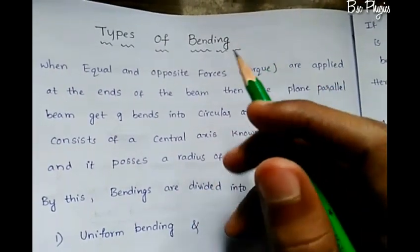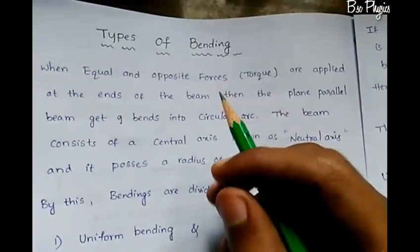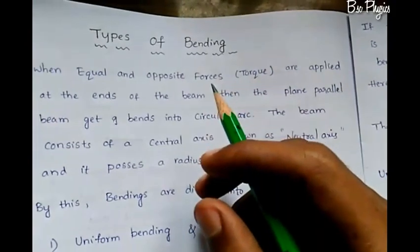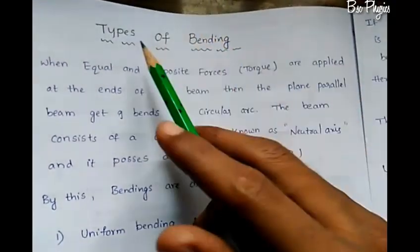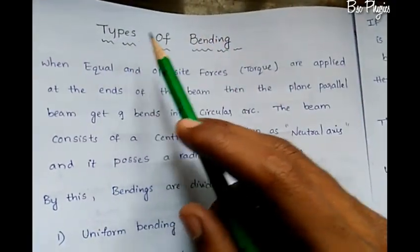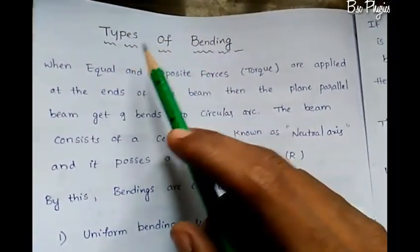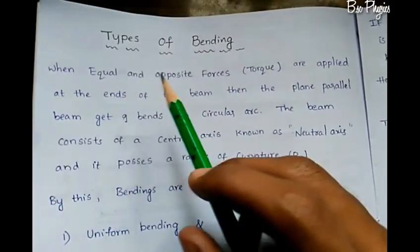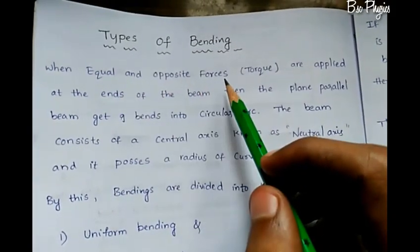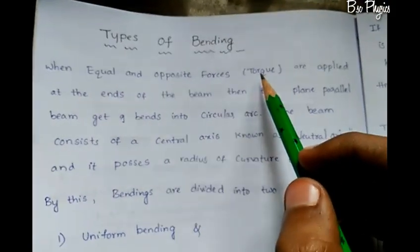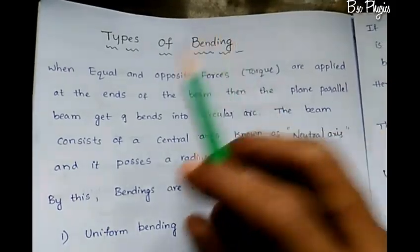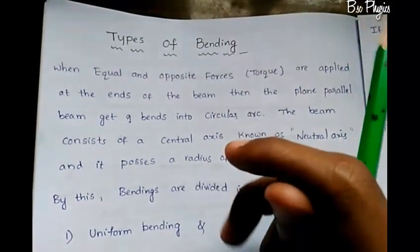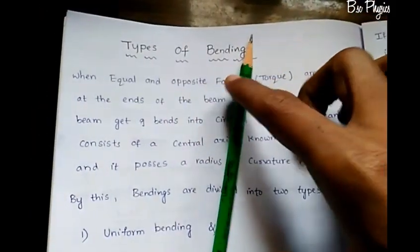There are two types of bending: uniform bending and non-uniform bending. When equal and opposite forces are applied, bending occurs.